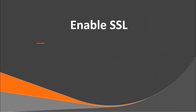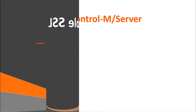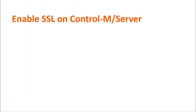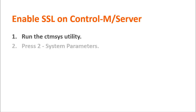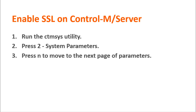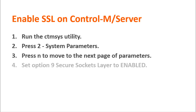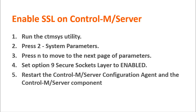Now we need to enable SSL in Zone 2 and 3. First, let's turn on SSL mode on Control-M Server. Run the CTM sys utility. Press to System Parameters. Press N to move to the next page of parameters. Set Option 9 Secure Socket Layer to Enabled. By default, all connected Control-M agents are now configured with SSL. Finally, restart the Control-M Server configuration agent and the Control-M Server component.